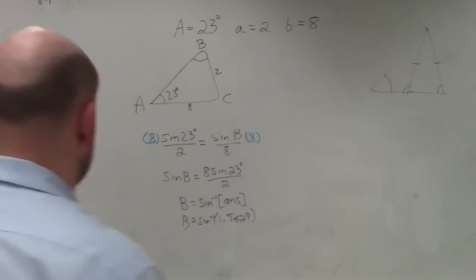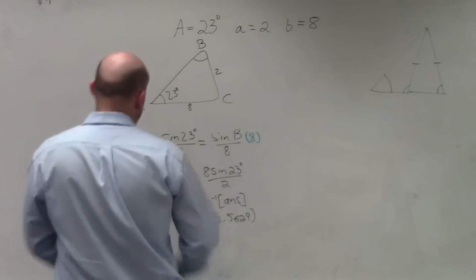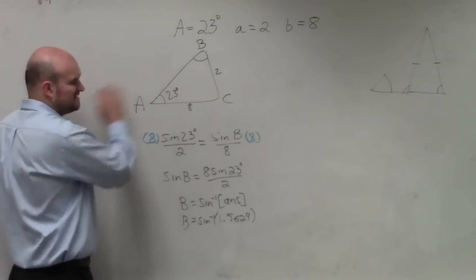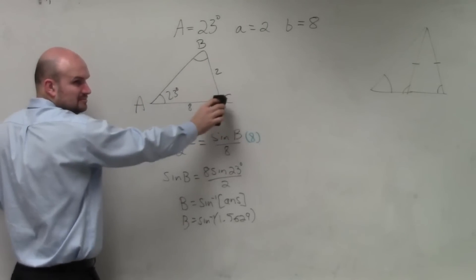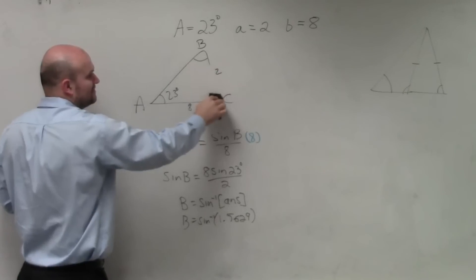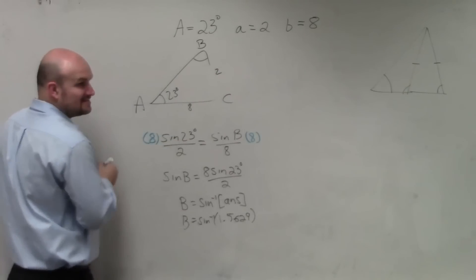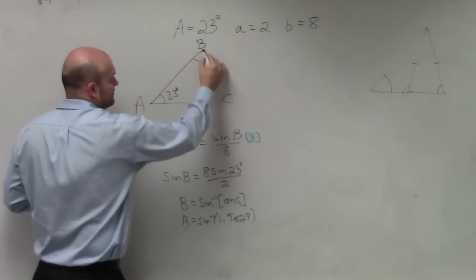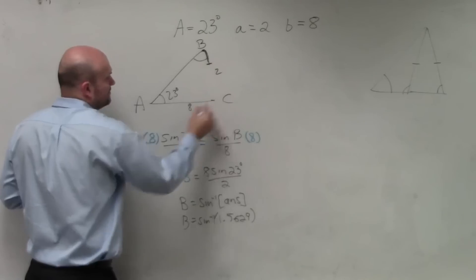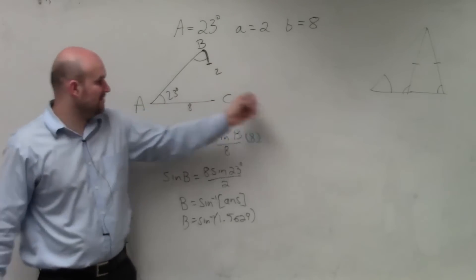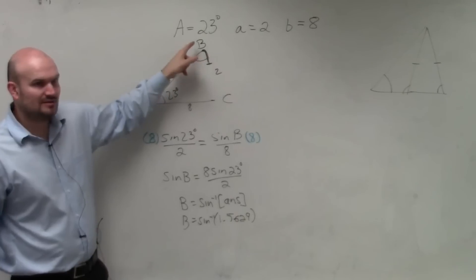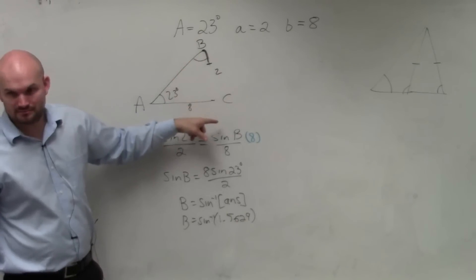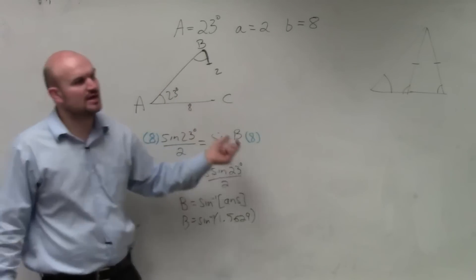Now, how does that look visually? Well, guys, let's pretend this triangle is drawn to scale. If this is 8, should that be 2? No, 2 would look something like this. So it doesn't matter how long I want to make this or however I want to change this angle, it's never going to create a triangle. So therefore, no triangle would exist.